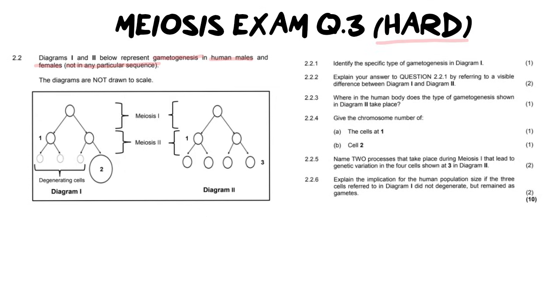The thing that gives it away as to whether it's male or female is this very large cell that is produced over here versus these three smaller cells. Because of that I can automatically tell that this is a female because at the end of oogenesis you will make one ovum and three polar bodies versus diagram two you have four evenly sized cells so that's definitely the male. I've also noticed that there is a number one and number two and a number three here and we're going to see what we're going to do with that later on.